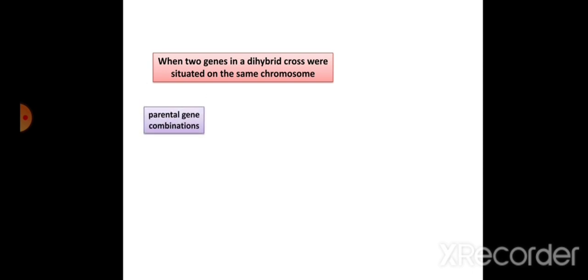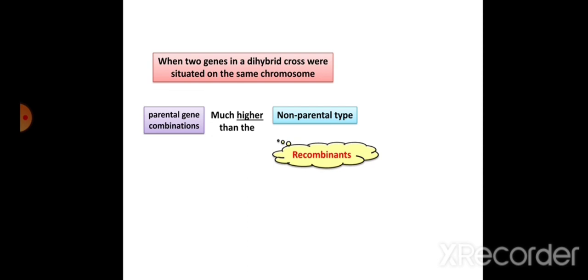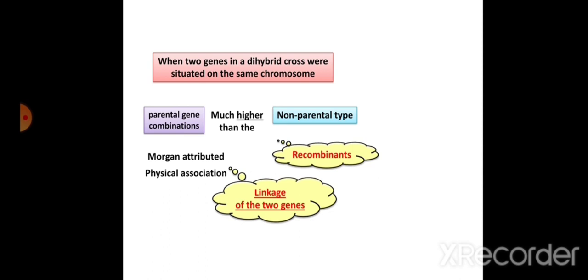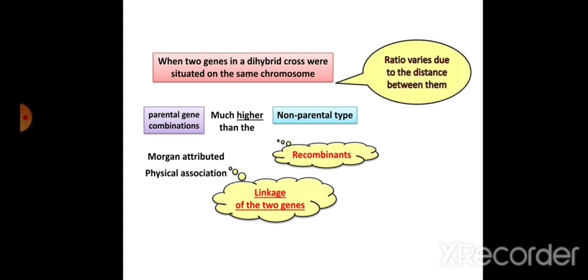When two genes in a dihybrid cross are situated on the same chromosome, the parental gene combinations appear much more frequently than the non-parental type. If the distance between the genes is less, parental combinations appear more. Non-parental types appear if the genes are not close to each other — they undergo crossing over, resulting in recombination. Morgan explained this as the physical association of linkage: the distance between genes is responsible for the degree of linkage. The ratio varies due to the distance between genes.